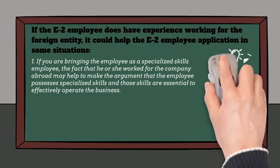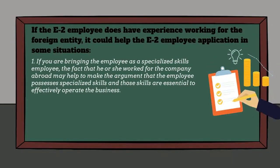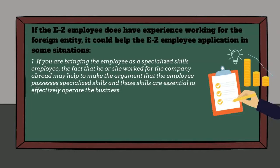For example, you could argue that the employee is already familiar with the company's operations and clientele abroad, and because the business is now expanding to the US and the E2 entity is a new entity, it needs someone who is already familiar with the company's operations to come to the US.